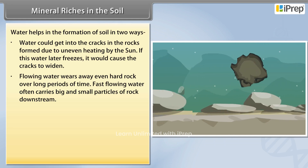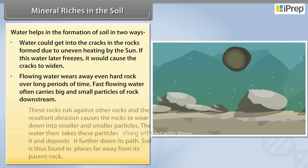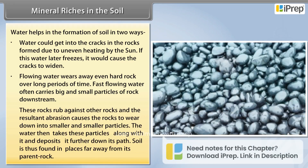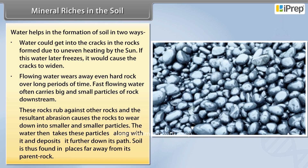Flowing water wears away even hard rock over long periods of time. Fast flowing water often carries big and small particles of rock downstream. These rocks rub against other rocks and the resultant abrasion causes them to wear down into smaller and smaller particles. The water then takes these particles along with it and deposits them further down its path, so soil is found in places far away from its parent rock.